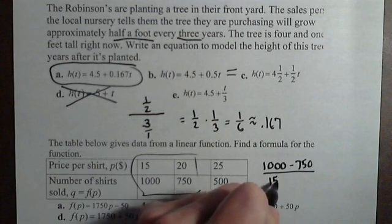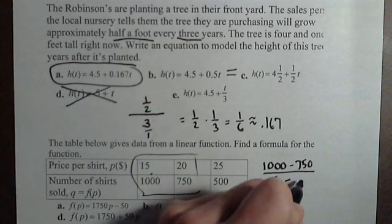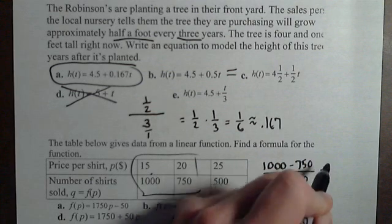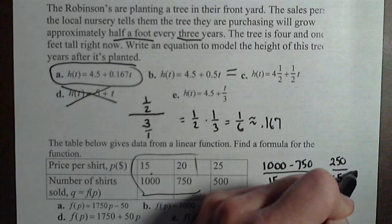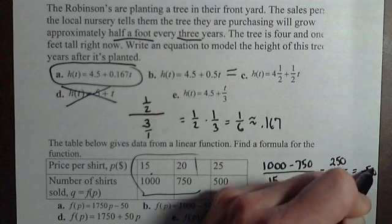it's gotta be over 15, and 750 has to be over 20. So I get 250 over a negative five, or negative 50.